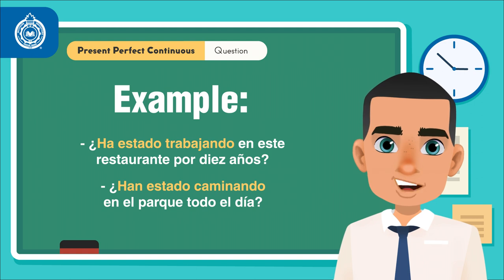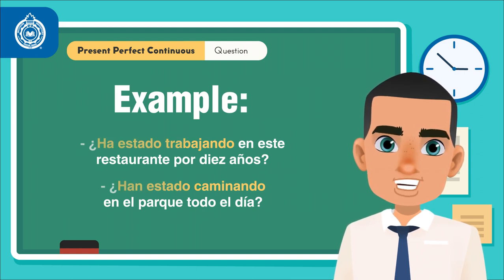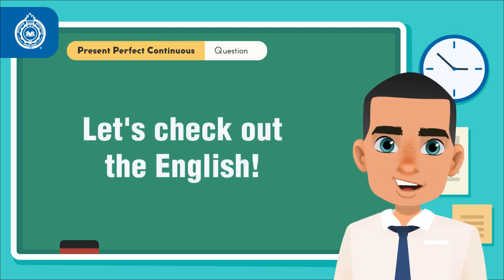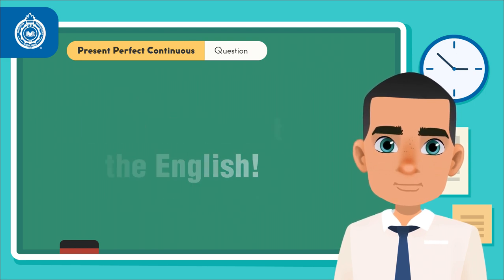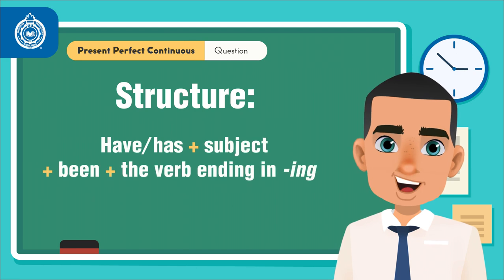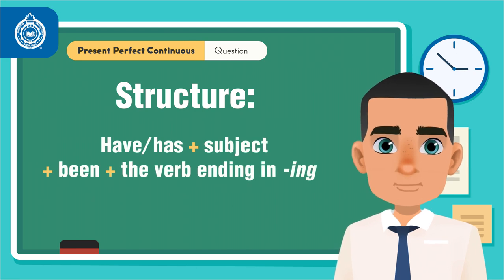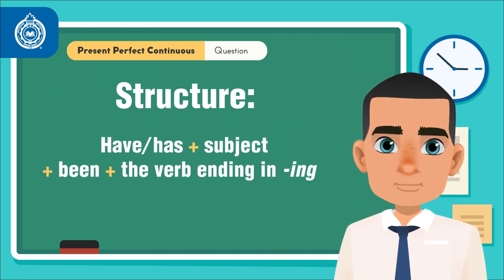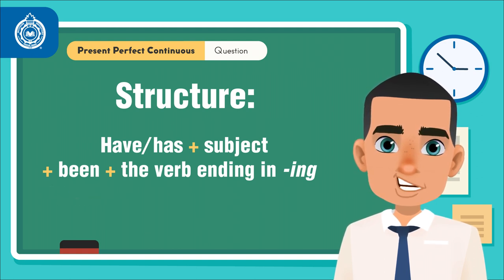Now that you have seen how to form questions in the present perfect continuous in Spanish, let's check out the English. The structure is as follows: have or has, plus subject, plus being — the participle form of to be — plus the verb ending in -ing.